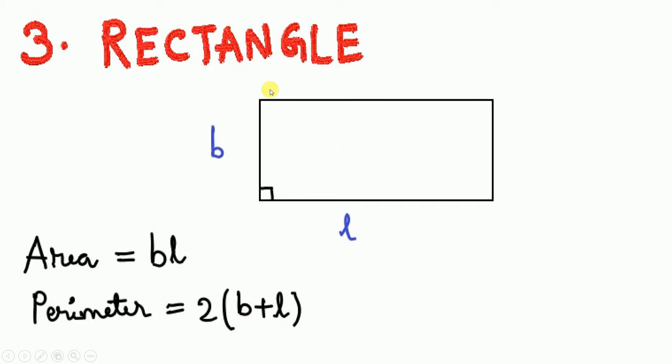Next is the rectangle: area = l × b, and perimeter = 2 × (l + b).